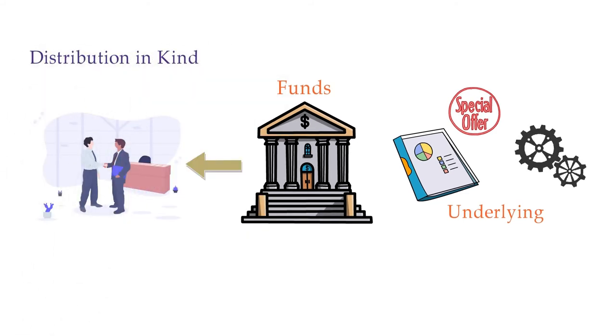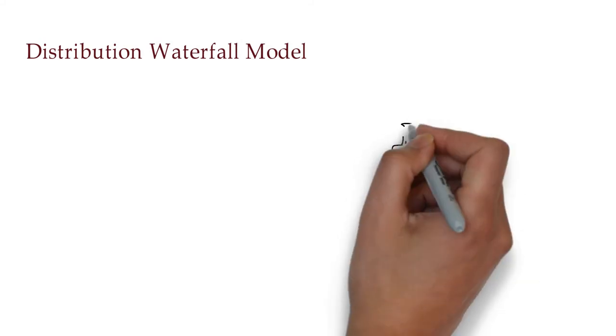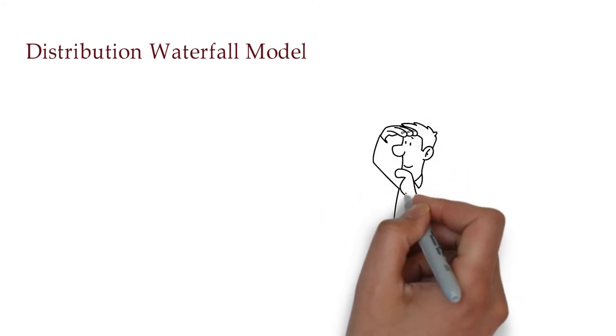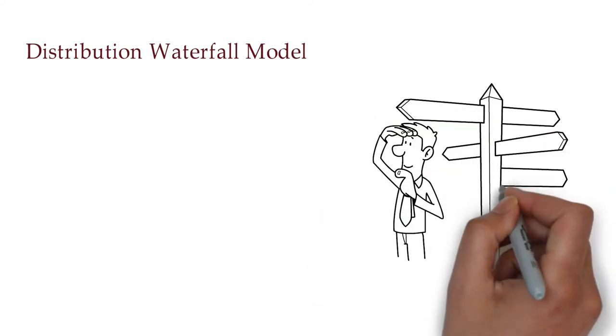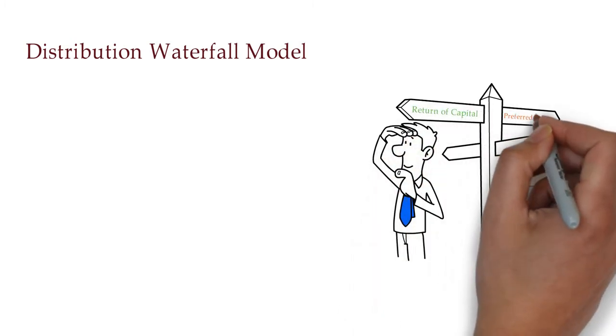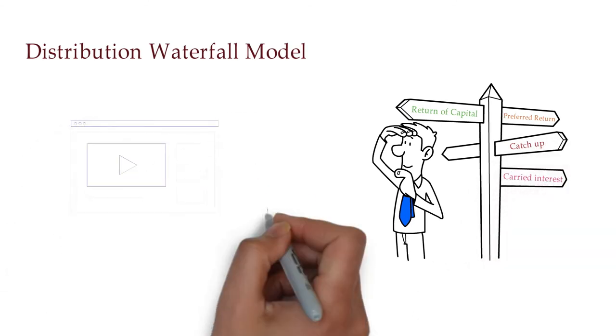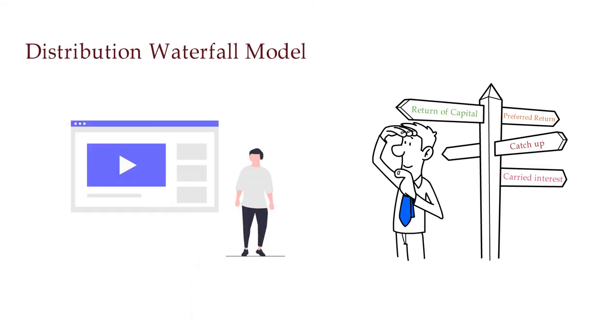Distribution is usually transferred through a distribution waterfall model which includes four constituent tiers to transfer the amount amongst the investors. The four tiers are: return of capital, preferred return, catch-up, and carried interest. We will create a separate video on distribution waterfall.